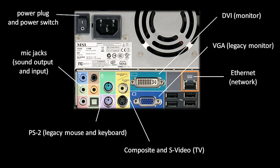This connector on the right, which looks like an oversized phone jack, is for ethernet, which is the most common connection for wired networking. Most commonly, this is the port you use to get an internet connection.